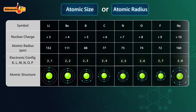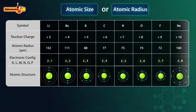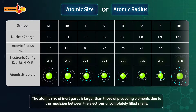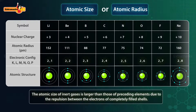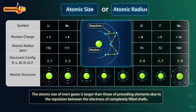It must be noted that inert gases like neon, argon, etc. are exceptions. Their atomic sizes are larger than the preceding elements due to the repulsion between the electrons of completely filled shells.